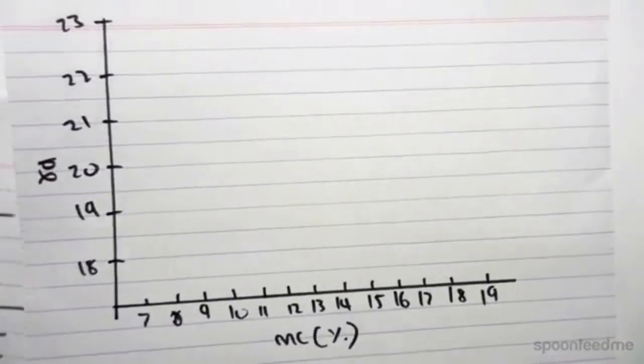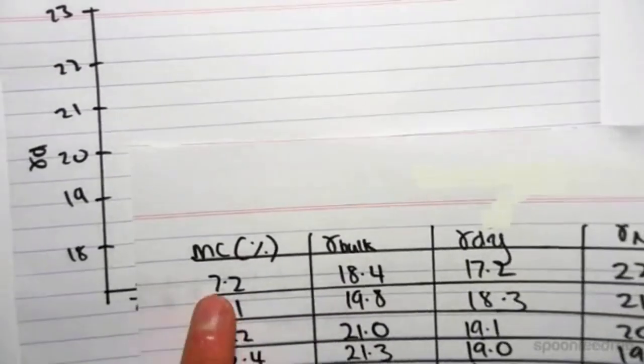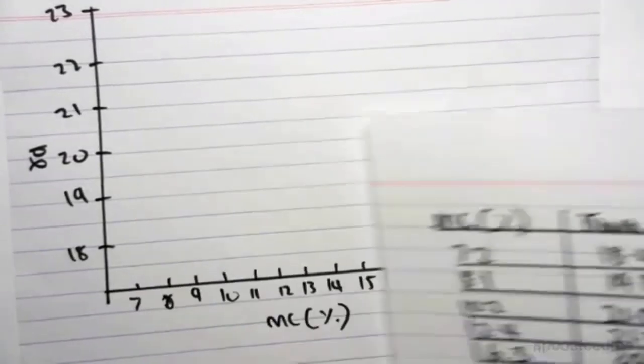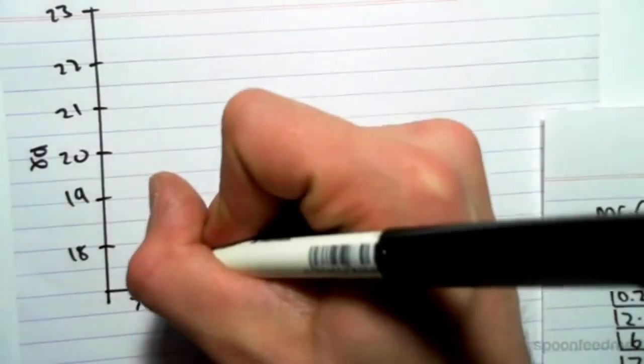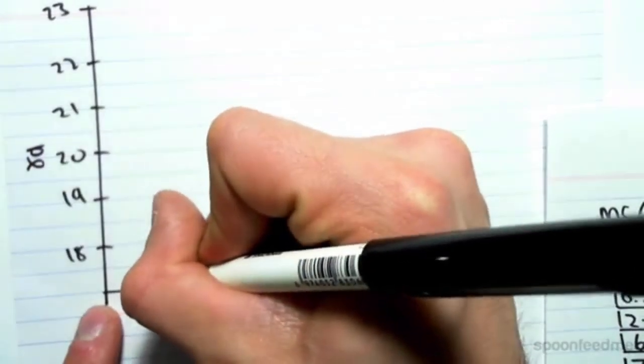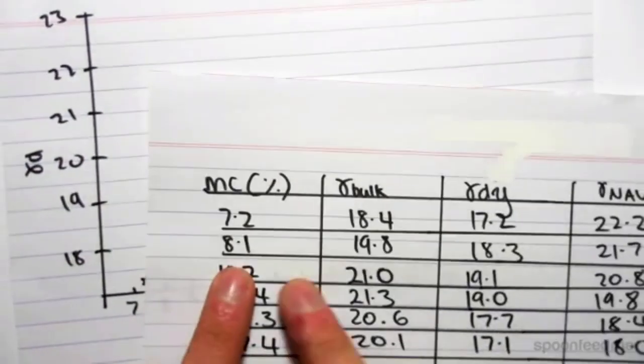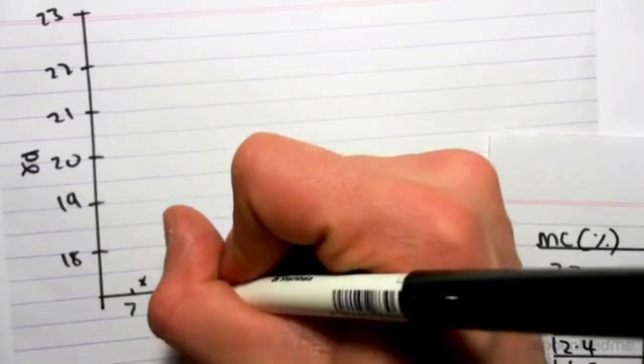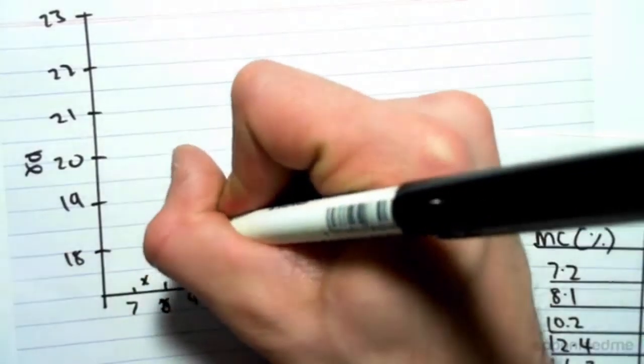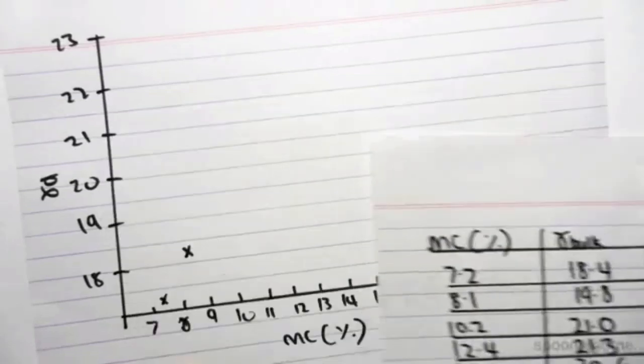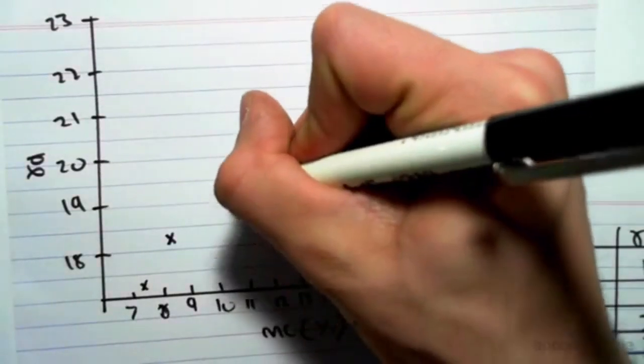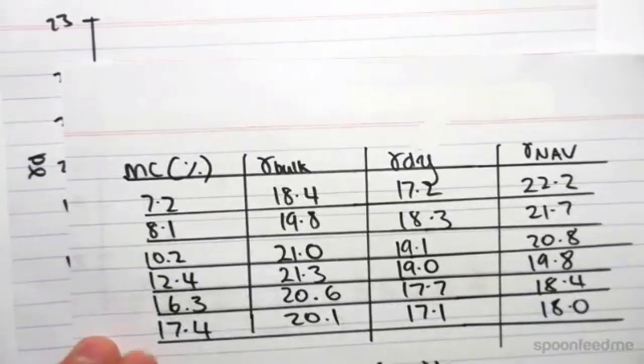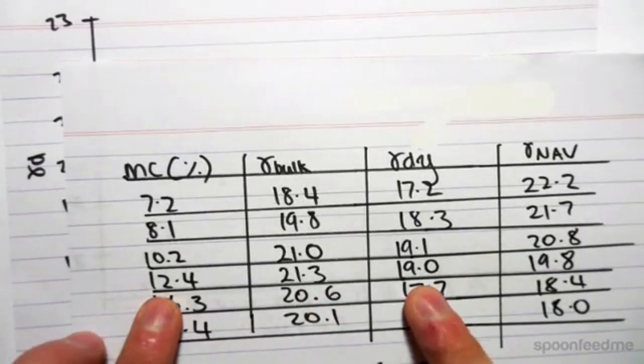7.2 against 17.2. So 7.2 and 17.2 would be around there. 8.1 and 18.3. So 8.1 and 18.3. 10.2 and 19.1. 10.2, 19.1. 12.4 and 19.0. So 12.4 and 19.0.